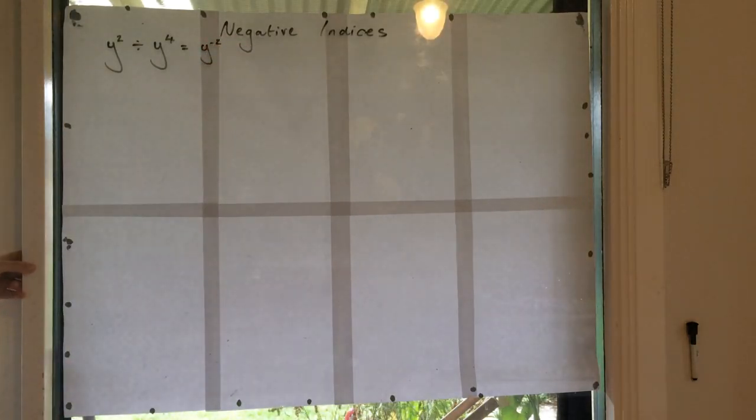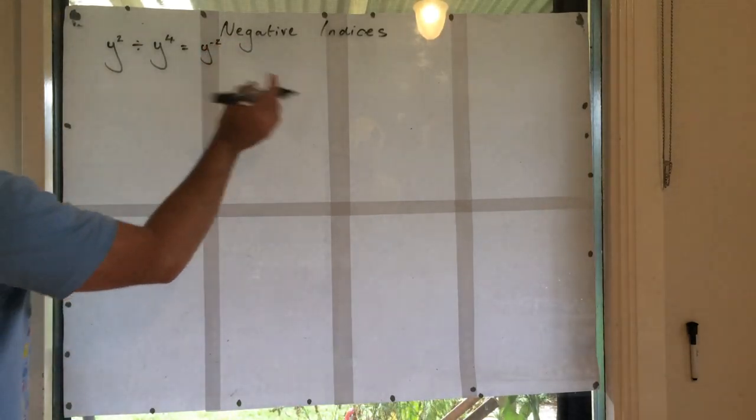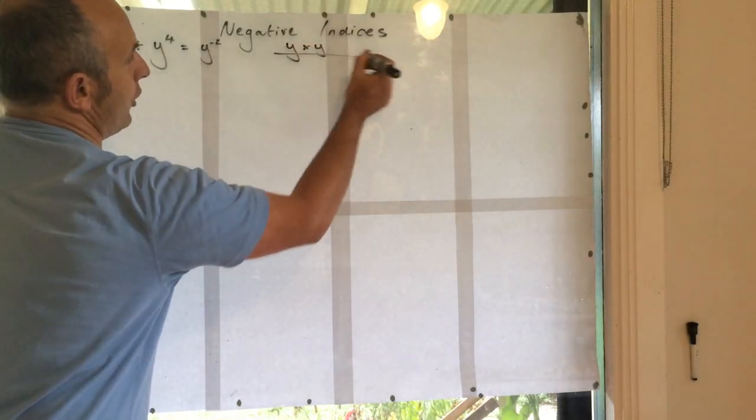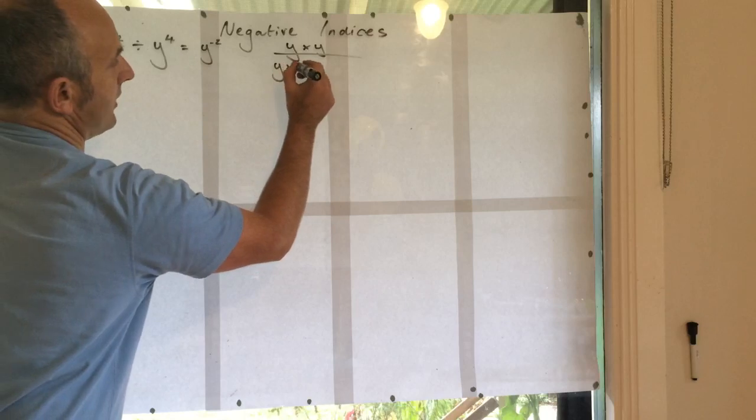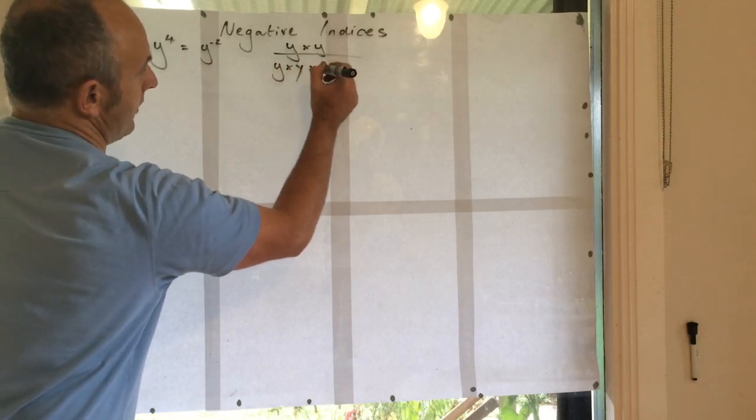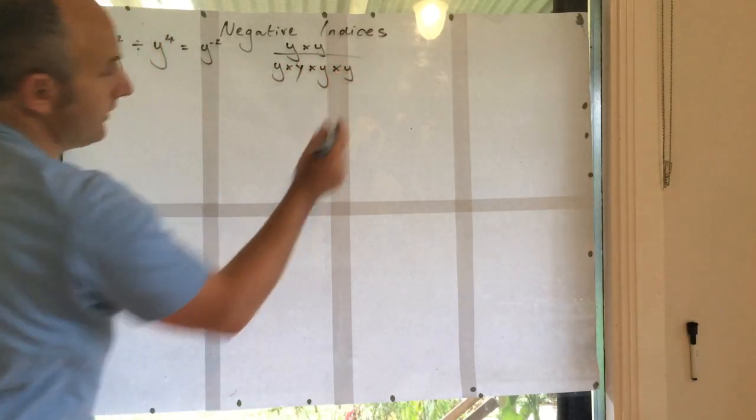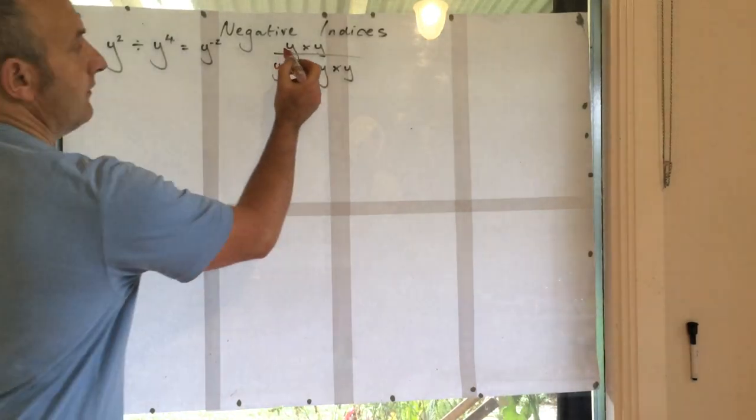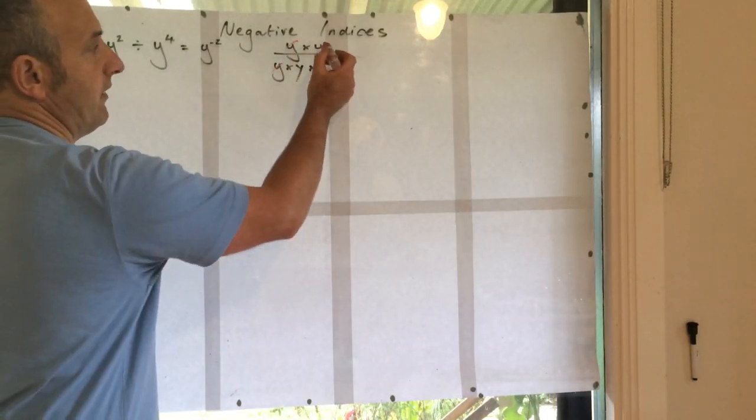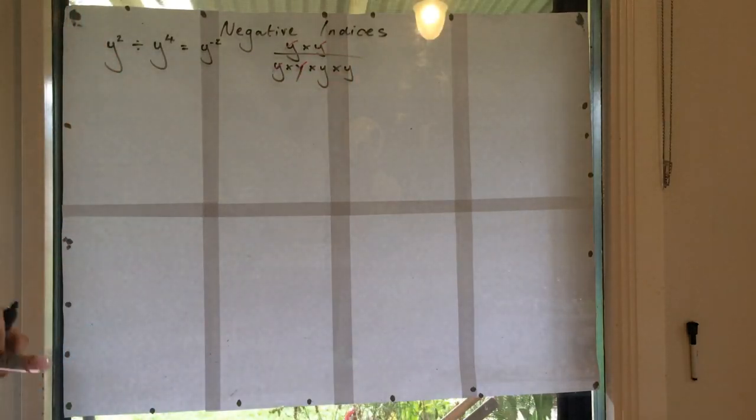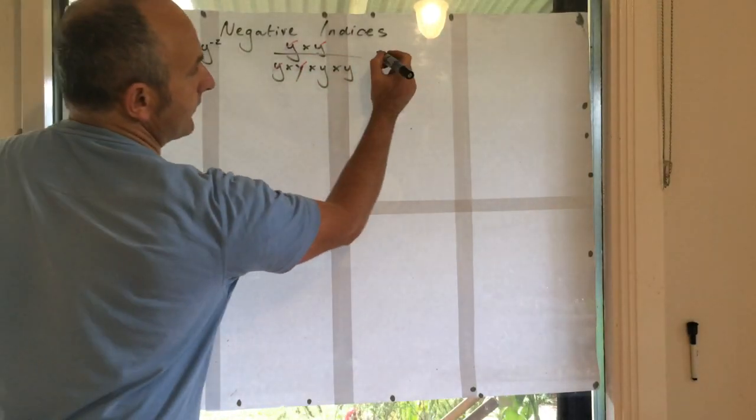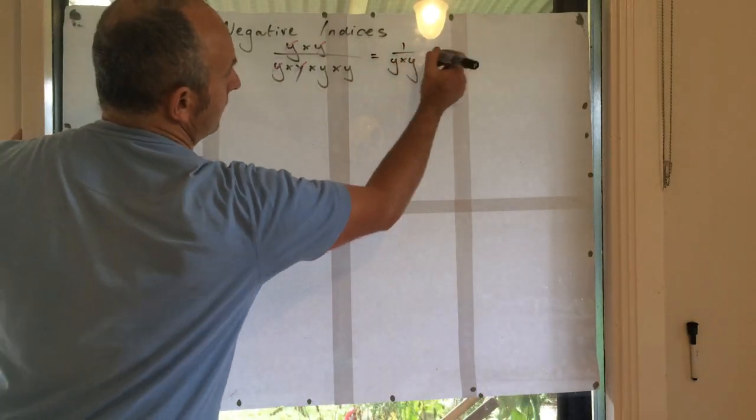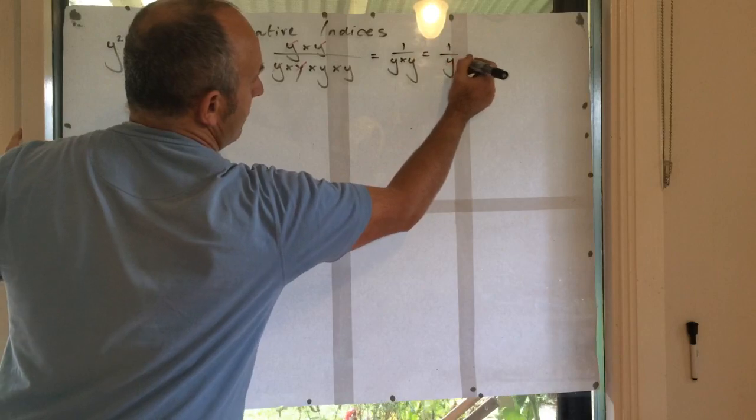So what we can now start to say is, well hang on a second, let's just look at that in factor form. So what we've got is y times y over y times y times y times y. And what we know is that that is going to kill off that, and that is going to kill off that. So what are we left with? We're left with 1 over y times y, or 1 over y squared.